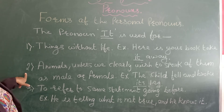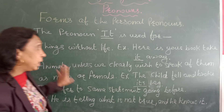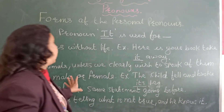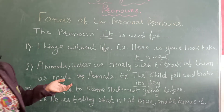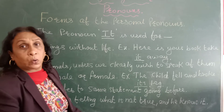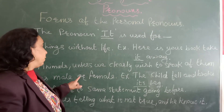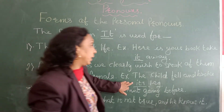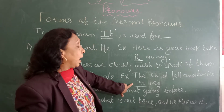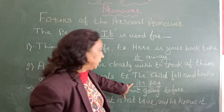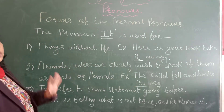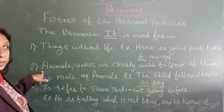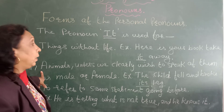The second rule — 'it' is also used with animals or human beings when we do not clarify whether they are male or female. When we do not know whether it is a male or a female, we use 'it'. For example: 'The child fell and broke its leg.' Here we don't know whether the child is a boy or a girl, so we use 'it'.